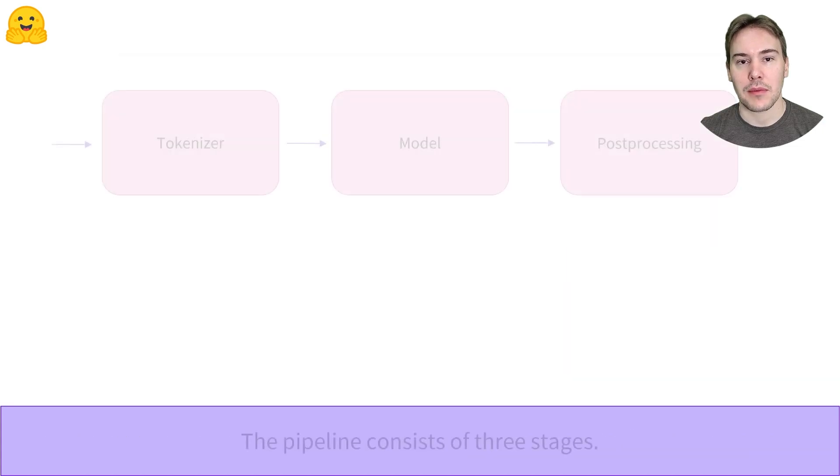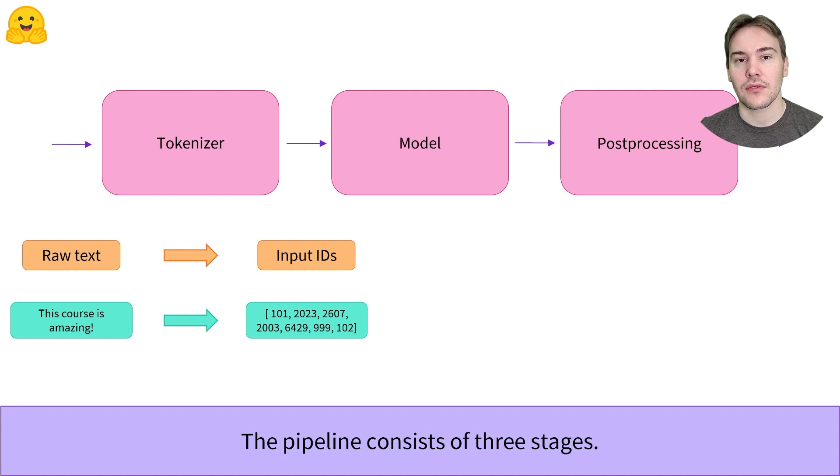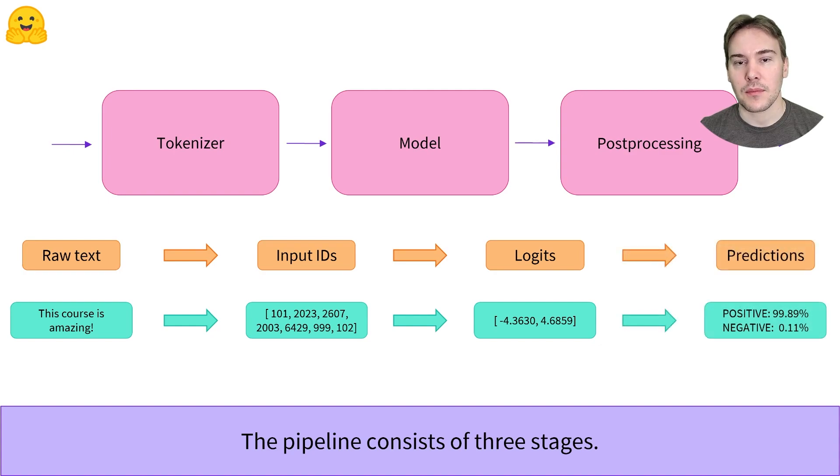As we've seen in the pipeline presentation, there are three stages in the pipeline. First, we convert the raw text to numbers the model can make sense of using a tokenizer. Then, those numbers go through the model, which outputs logits. Finally, the post-processing steps transform those logits into labels and scores.